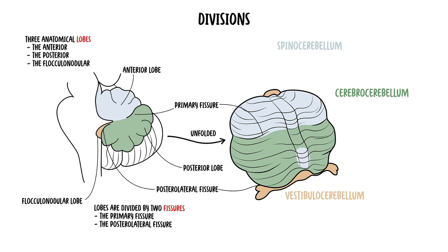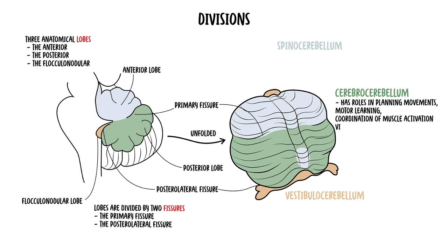The cerebrocerebellum is the largest of the three divisions and is formed by the lateral hemispheres. It has roles in planning movements, motor learning, coordination of muscle activation and visually guided movements. It receives input from the cerebral cortex and pontine nuclei, and sends out signals to the thalamus and red nucleus.